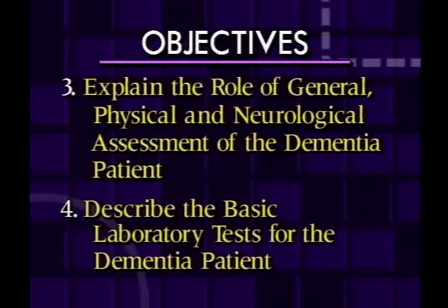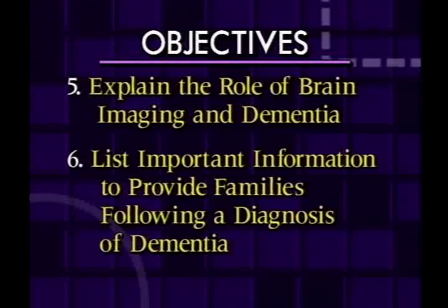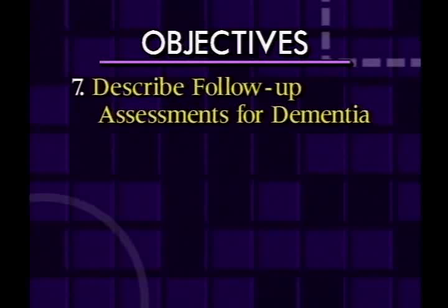These are important in excluding physical causes. Number four, we want to describe basic laboratory tests that should be ordered on pretty much every patient. Number five, we want to explain the role of brain imaging in dementia, a very controversial area. Number six, we want to enlist important information to provide families following the diagnosis of dementia, because families have to be included in this process. And number seven, we want to briefly discuss the types of follow-up studies and periods of follow-up that ought to be carried out in a patient with dementia.